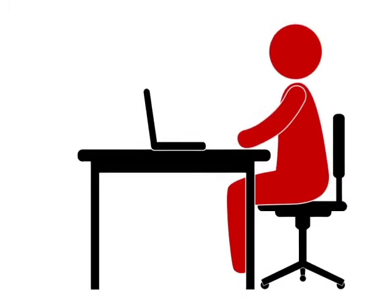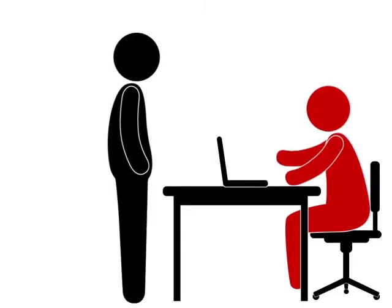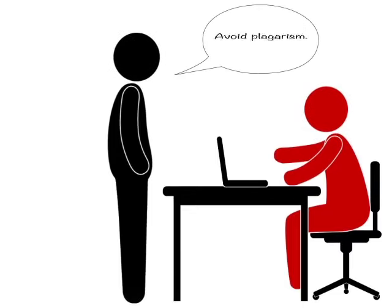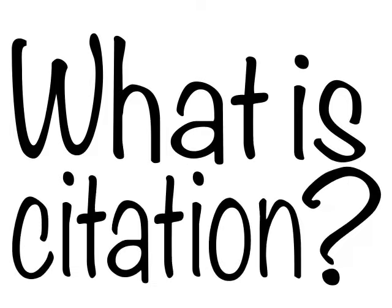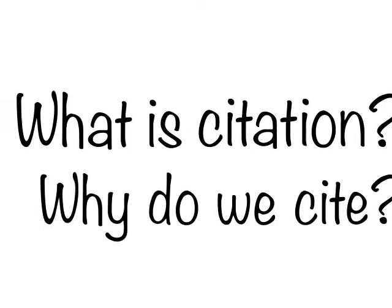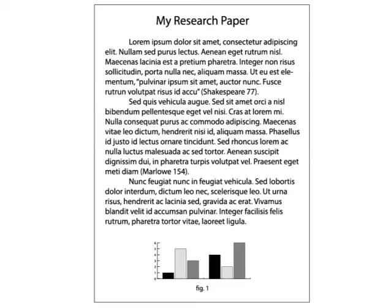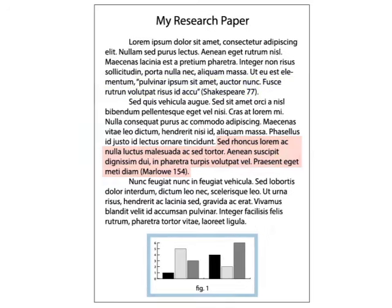At some point in your career as a student, you've probably had a teacher tell you to cite your sources while writing a research paper. But what is a citation, and why do we do it? Citation is the practice of identifying the sources you have quoted, paraphrased, or otherwise used in your writing, and is pretty standard practice in academic writing.